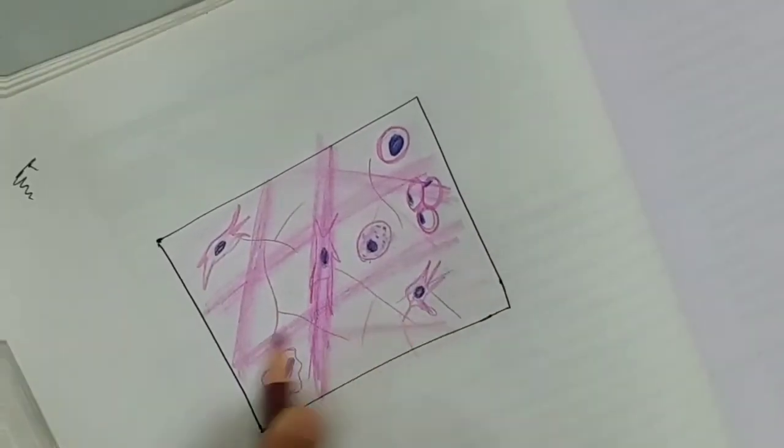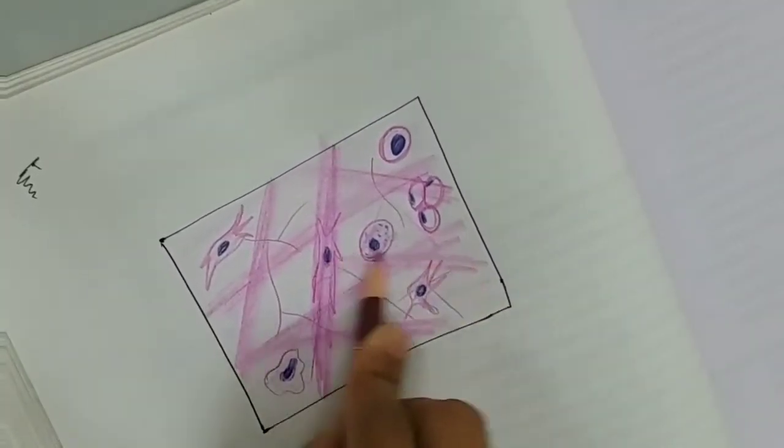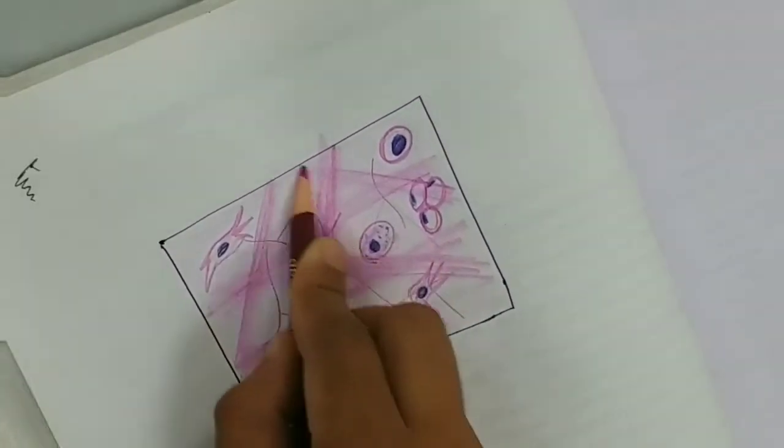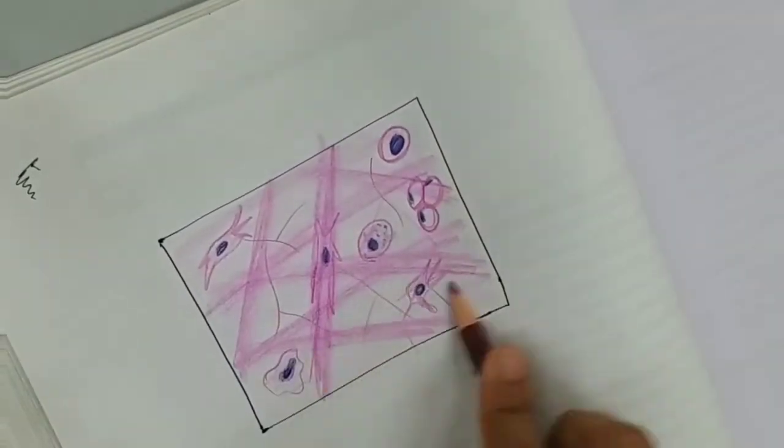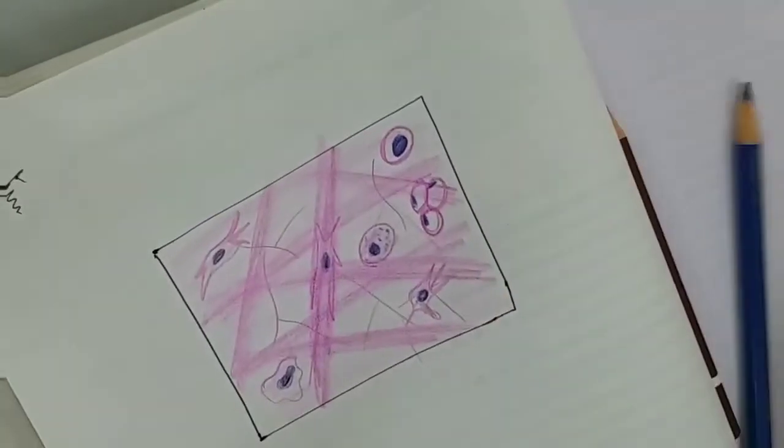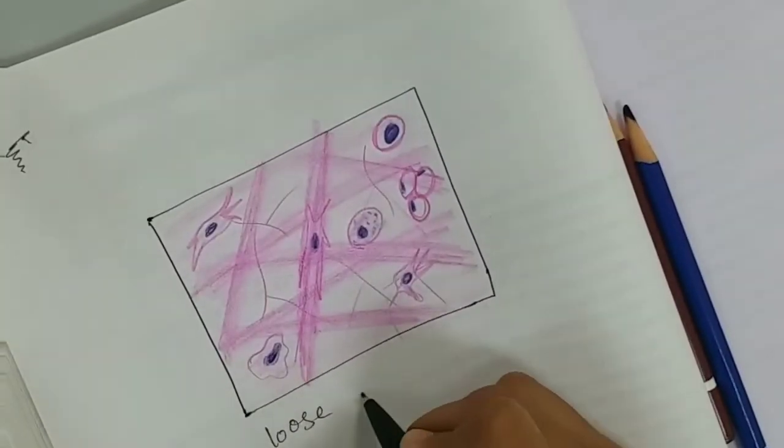So loose areolar tissue contains the fibers, ground substance, and cells. Ground substances are glycosaminoglycan, proteoglycan, and glycoprotein.